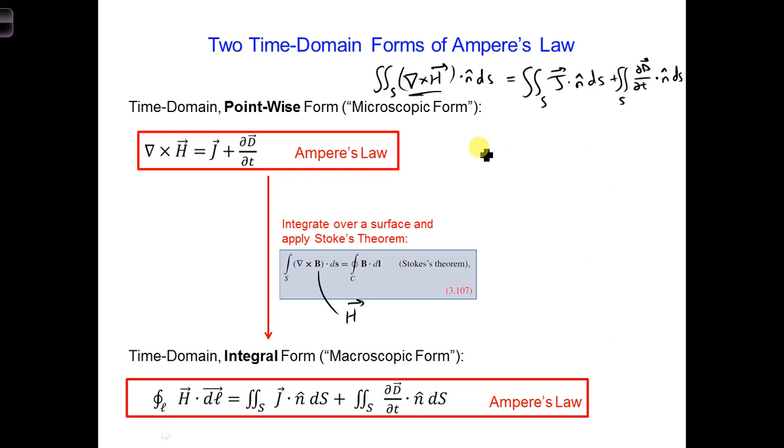And so applying Stokes' theorem, we can write this. Let me not rewrite that again. We already have it. So we're going to basically use Stokes' theorem to rewrite a surface integral as a line integral. So I'm going to replace this with the right-hand side of what's here. So we have now a closed contour integral of H dot DL. And now I can set that equal to what's on the right side of this equation.